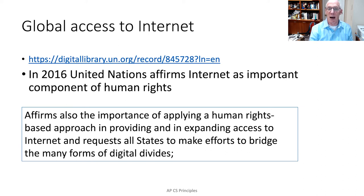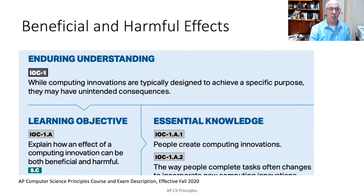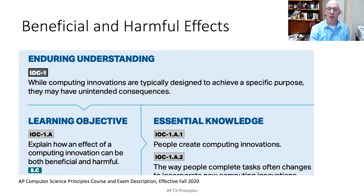The internet is also allowing us to access information very quickly. From that same United Nations report, the UN affirms the importance of applying a human rights-based approach to expanding access to the internet, and requests all states — meaning countries — to make efforts to bridge the many forms of digital divide. This digital divide concept is across the world and important in many constituencies, because we want to be able to use the internet to do good things. But those good things sometimes have a harmful effect, as we can see from the Computer Science Principles course description: while computing innovations are typically designed to achieve a specific purpose, they may have unintended consequences.